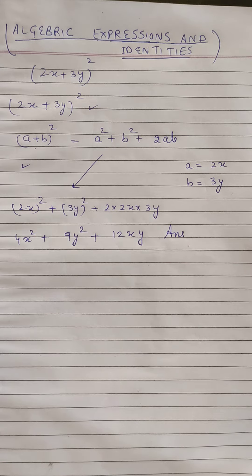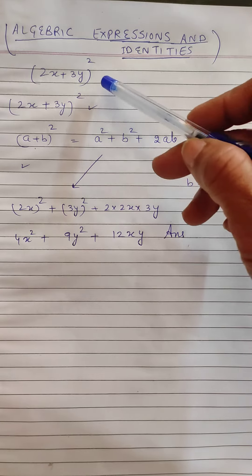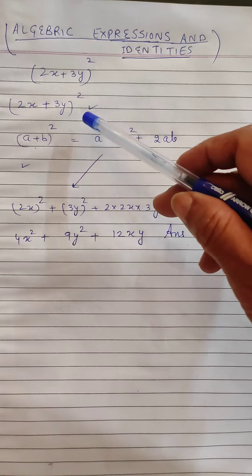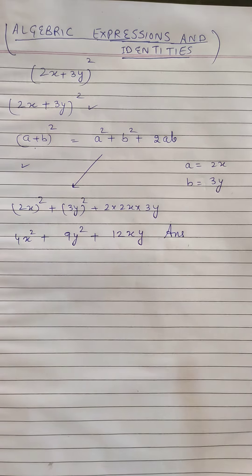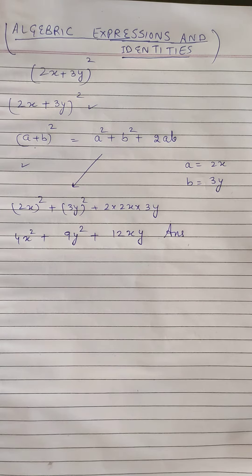Let's take another example of algebraic expressions and identities. Here the question is (2x + 3y)². Whenever we see this kind of sum, we know that this is the (a + b)² identity.